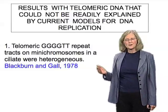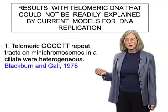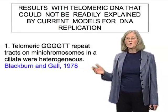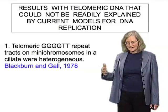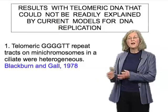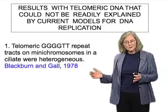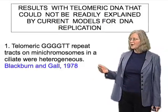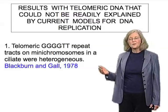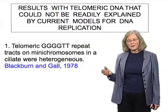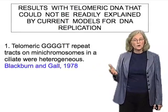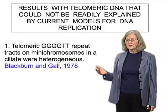That was very surprising, because if you look at the internal region of a chromosomal DNA, one cell compared with another in a population from one organism should always be an identical sequence. Yet here were different numbers of repeats at the ends of different molecules in a population of cells that were otherwise homogeneous in their internal regions of the chromosome.